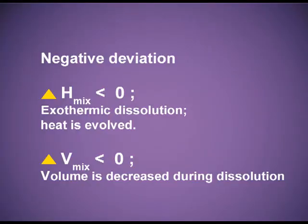For solutions showing negative deviation, the solute-solvent interactions are stronger than in the pure components. When the resultant bond is stronger, the escaping tendency will be lesser compared to the pure component. Due to this, delta-H mixing will be less than zero, delta-V mixing will also be less than zero, and the partial vapour pressures will be less than the vapour pressure of the pure component.